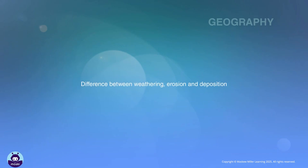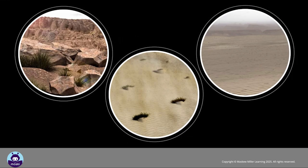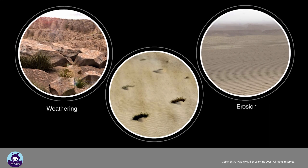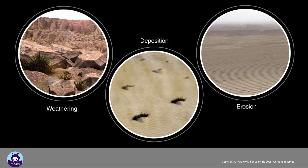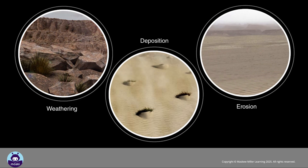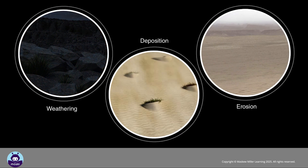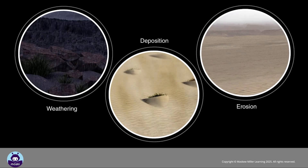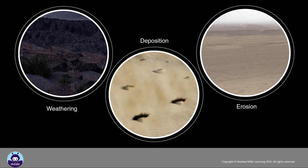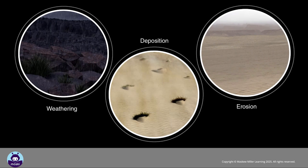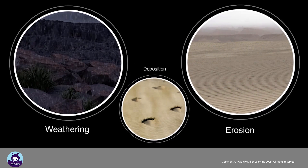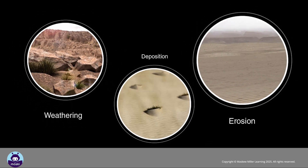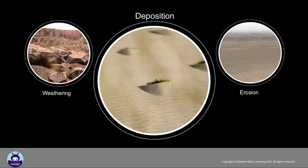The differences between weathering, erosion, and deposition. The processes of weathering, erosion, and deposition are separate, but linked. Together, these three processes are responsible for many of the features we see on the Earth's surface. Weathering and erosion wear away the Earth's surface, while deposition builds it up.